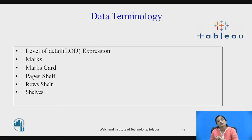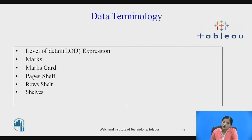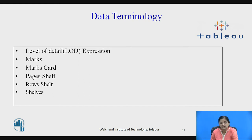Row shelf occurs on the top of the worksheet and is used to create rows in the data table. Dimensions and measures can be dragged and dropped into the row shelf. When you drag dimensions, the row shelf automatically creates headers for those dimensions. When you drag measures, it creates a quantitative axis. Shelves are named areas to the left and top of the worksheet used to create views by dragging and dropping dimensions and measures.